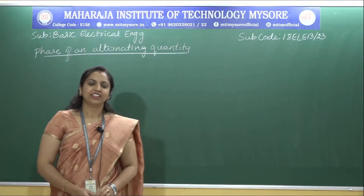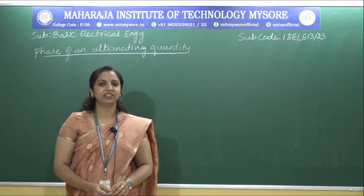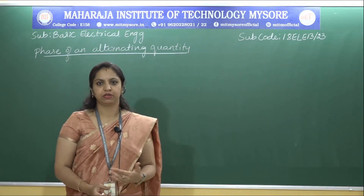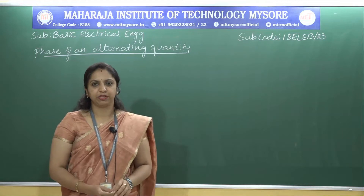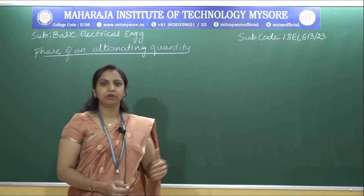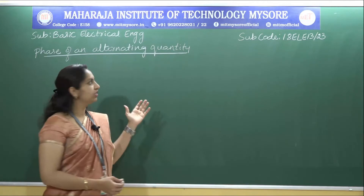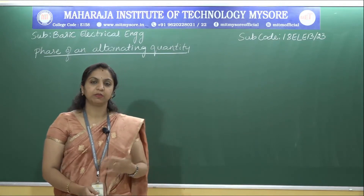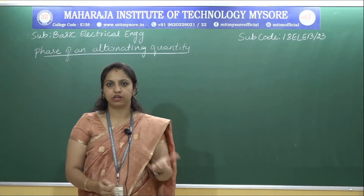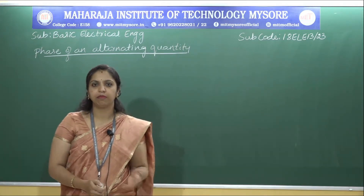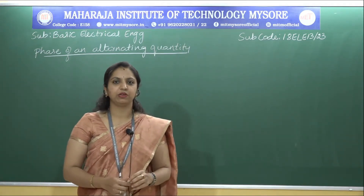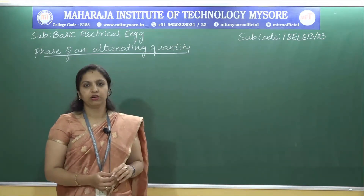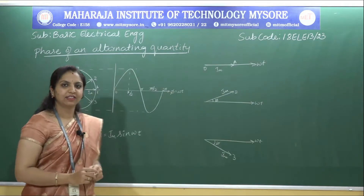In the previous session I derived expressions for RMS value, average value, form factor, and peak factor, and solved problems on these topics. In this session I will be explaining the phase of an alternating quantity. I have explained many parameters of an alternating quantity like frequency, amplitude, RMS value, and average value.